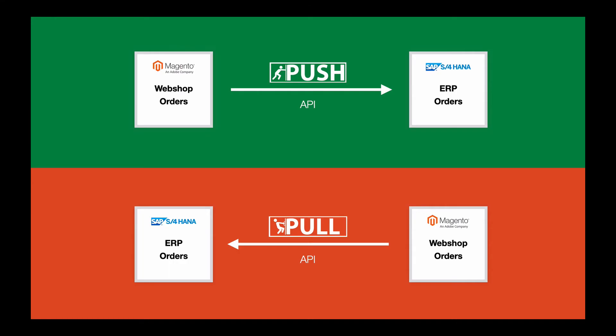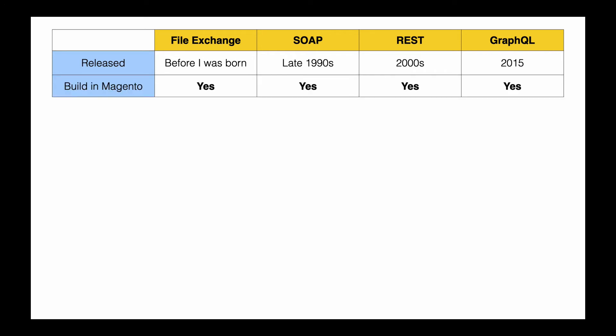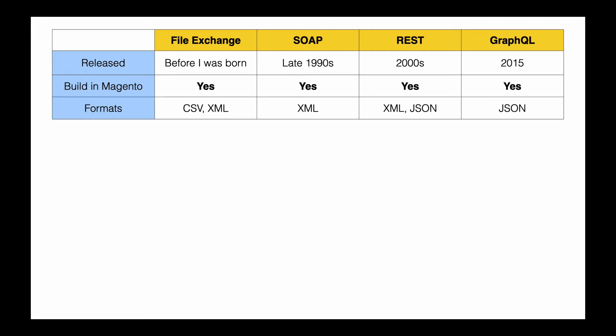It is important to decide whether data is pushed to the ERP system or whether the ERP system pulls data from Magento. The push variant is often more recommendable because it transfers data in real-time. Every decade a new API standard was introduced — file exchange, SOAP, REST and GraphQL are the popular standards today, and the good news is that Magento supports all of them natively. The current formats are usually XML or JSON.